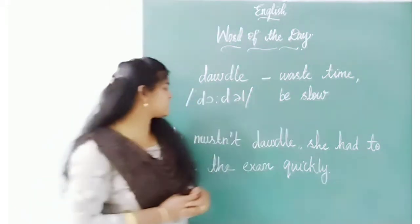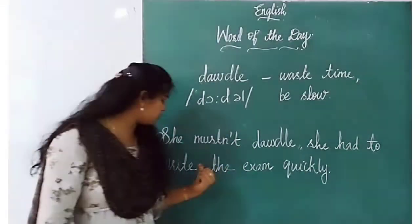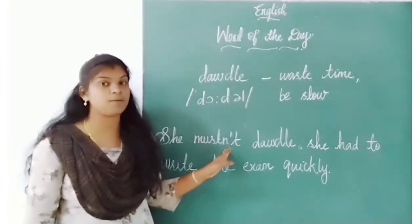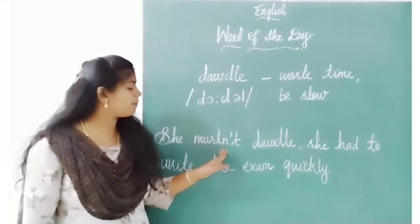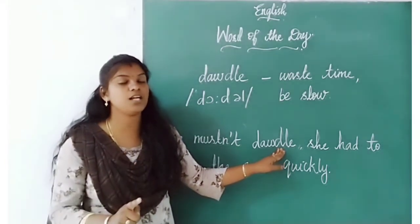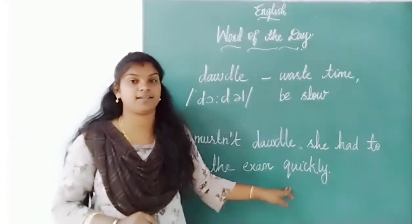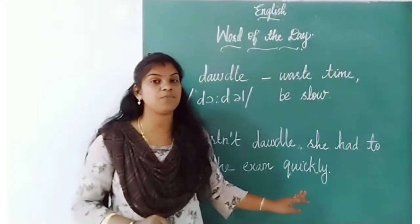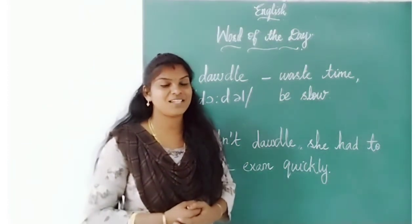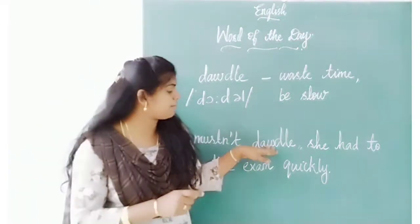For example: 'She mustn't dawdle — she had to write the exam quickly.' She must not dawdle, which means she should not waste her time and she should not be slow. When we write an exam, we waste all our time and at the end we write quickly. That is dawdling. Dawdle means waste of time and also be slow.